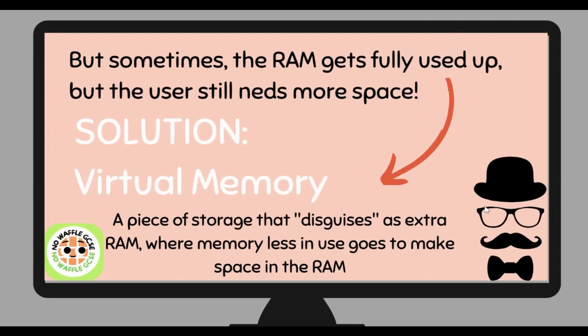Sometimes the RAM gets fully used up because it has a limited capacity, but the user still needs more space. The solution to this problem is called virtual memory. Virtual memory is when a piece of storage disguises itself as extra RAM. The memory that is used less gets moved into the virtual memory, making space in the RAM for more currently used programs.